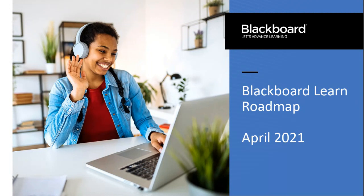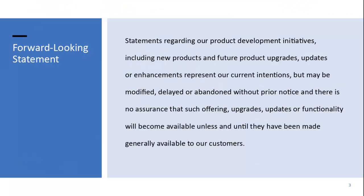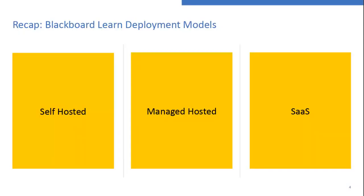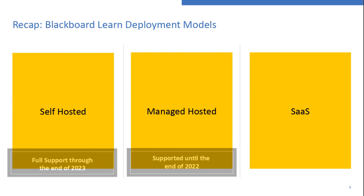Before we dive into the exciting part of the roadmap — the features and capabilities — we want to start with a quick recap on the different deployment models that currently exist for Blackboard Learn. As most of you will know, there are currently three deployment models available: self-hosted, where you host Learn yourself; managed-hosted, using Blackboard's data centers; and SaaS, where Learn is hosted in the cloud using Amazon Web Services.